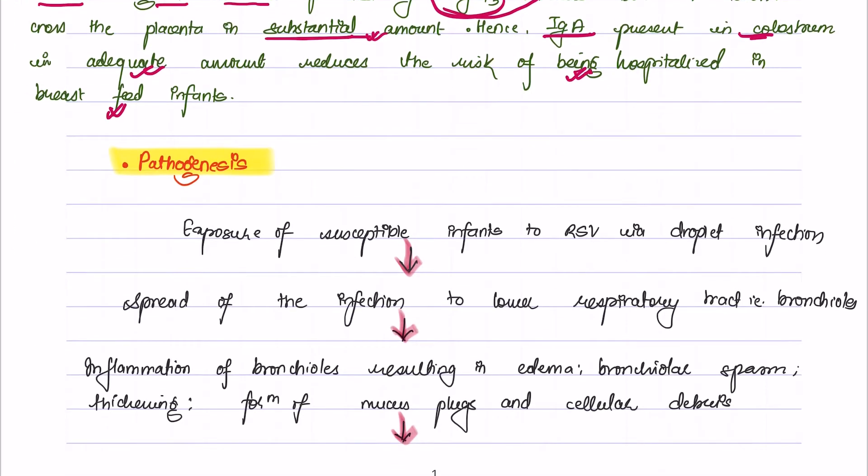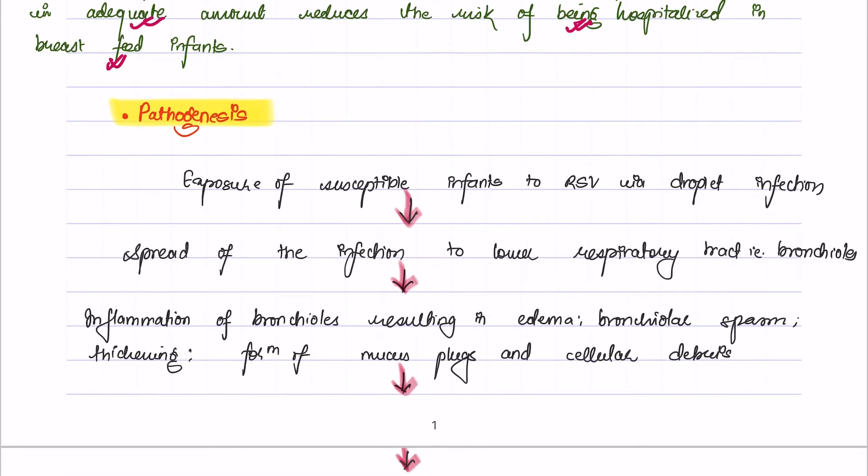The pathogenesis of bronchiolitis is as follows: There is exposure of susceptible infants to respiratory syncytial virus via droplet infection, and this results in the spread of infection to the lower respiratory tract, that is the bronchioles.